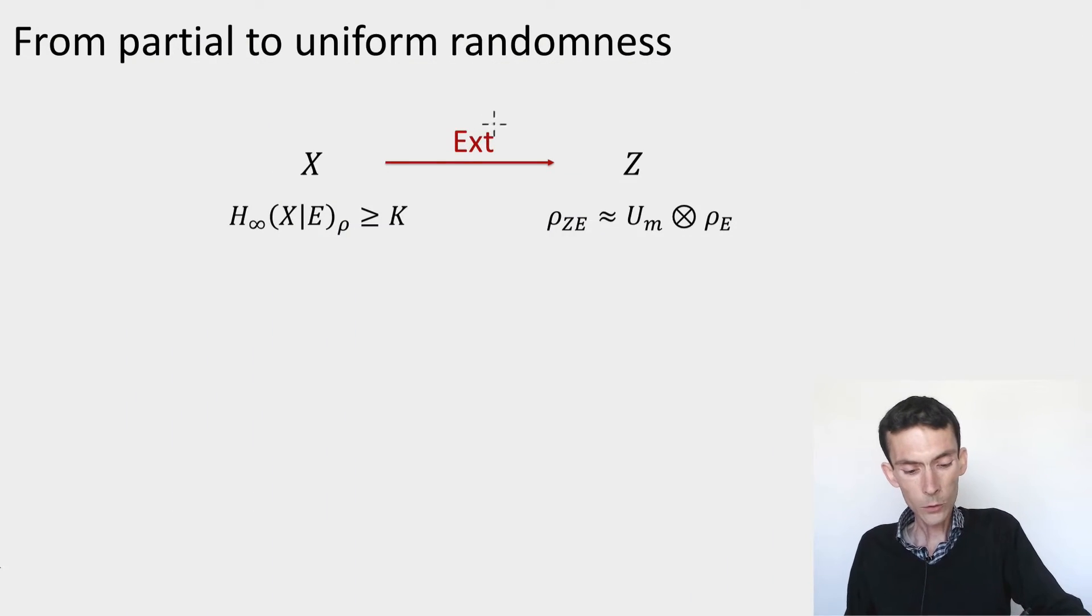So what's an extractor? It's a function that I'll usually denote by Ext, which takes as input a random variable X about which we only have one piece of information, which is that the min entropy of this random variable X conditioned on some side information E, could be classical, could be quantum, is at least K. So that's what's given about X. And our goal is that X produces a string Z.